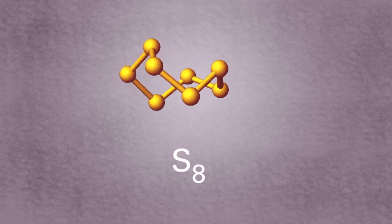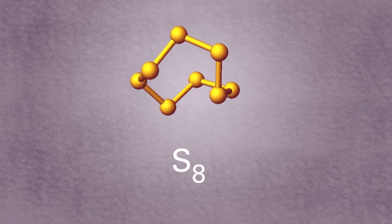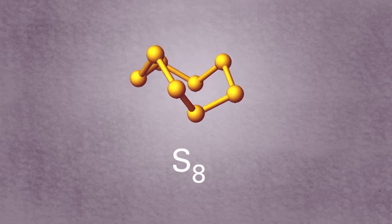Sulfur also exists as many allotropes. The one that you're most likely familiar with is S8, octosulfur, a bright yellow solid. In this allotrope, eight sulfur atoms are covalently linked to one another to form such a structure.